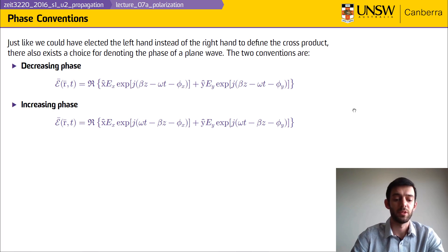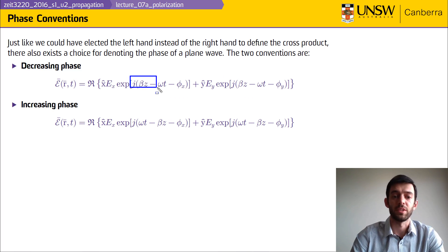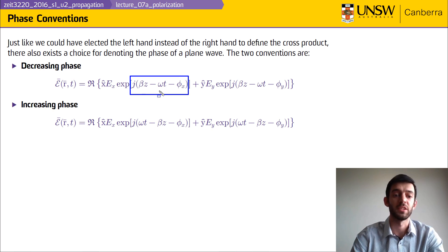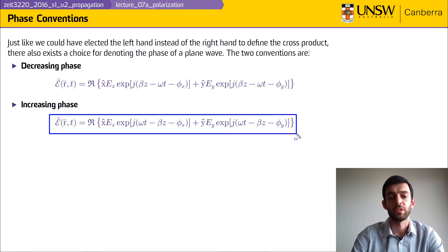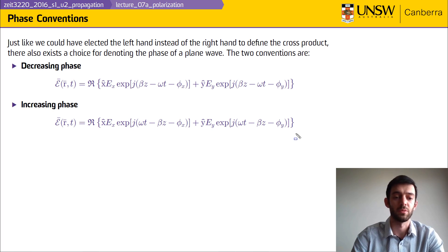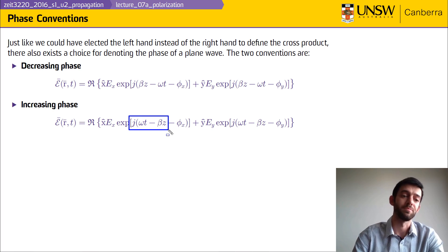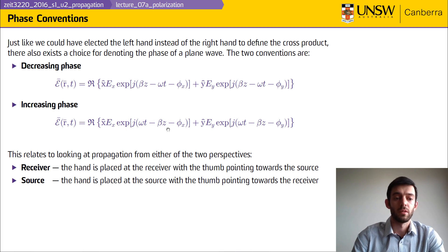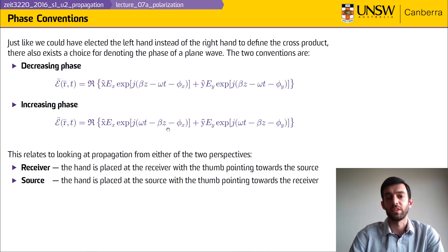Now we can look at them from two different perspectives. We can either look at the decreasing phase, which becomes obvious from the argument of our exponentials as j·β·z − j·ω·t, or we can have the increasing phase which will have the opposite: j·ω·t − j·β·z.